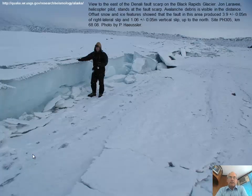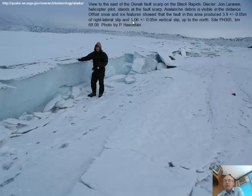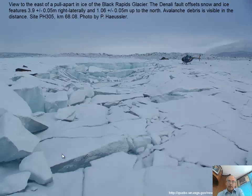This example is on ice — the rupture went through a glacier. These are helicopter pilots here. There are interesting secondary effects: this is an avalanche — the mountains around the glacier shook so much they sent debris down across the glacier. The glacier also broke from the earthquake. Here, there's no obvious offset visible, but 1.06 ± 0.05 meters — very precise. This is at kilometer 68.